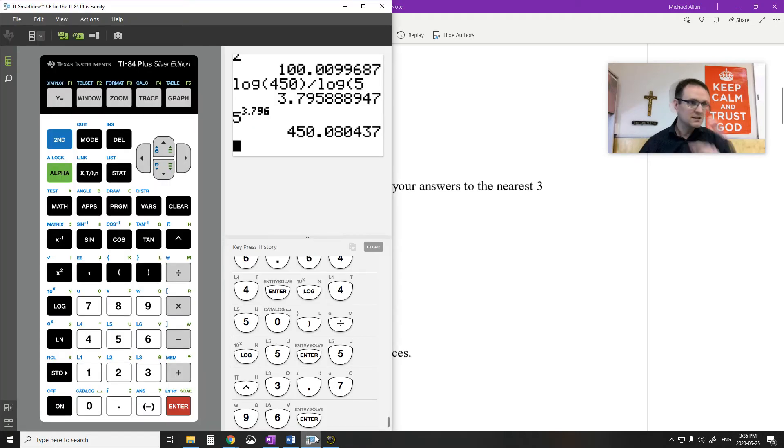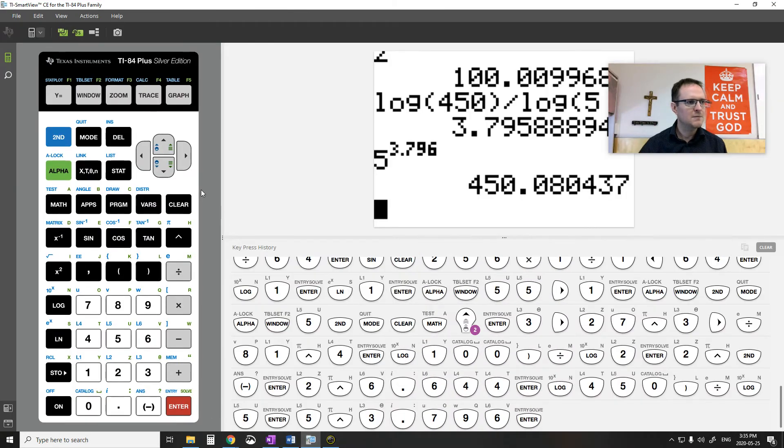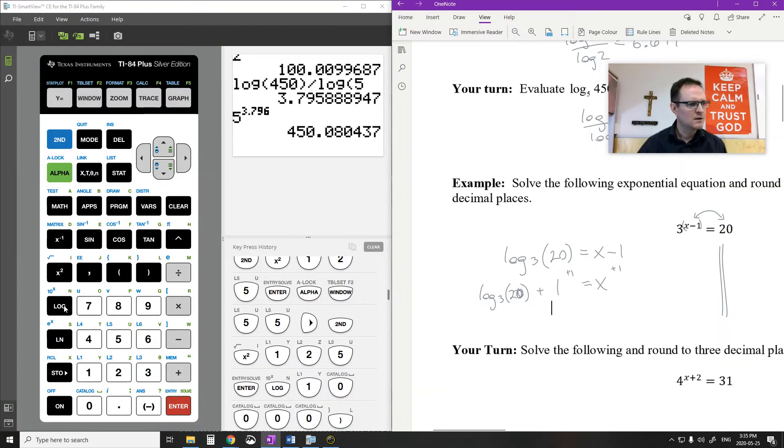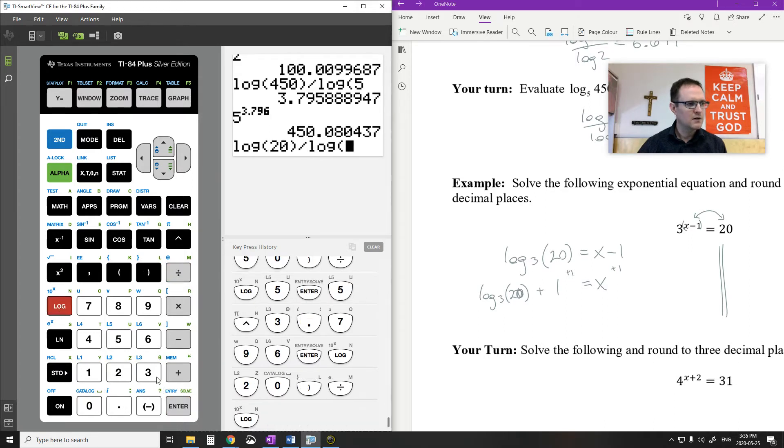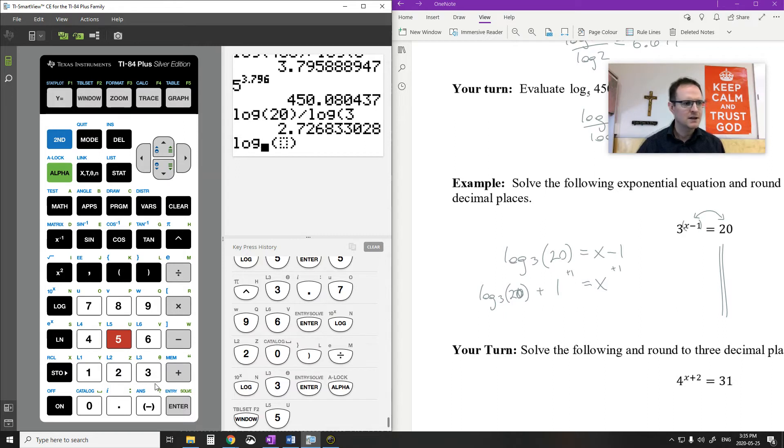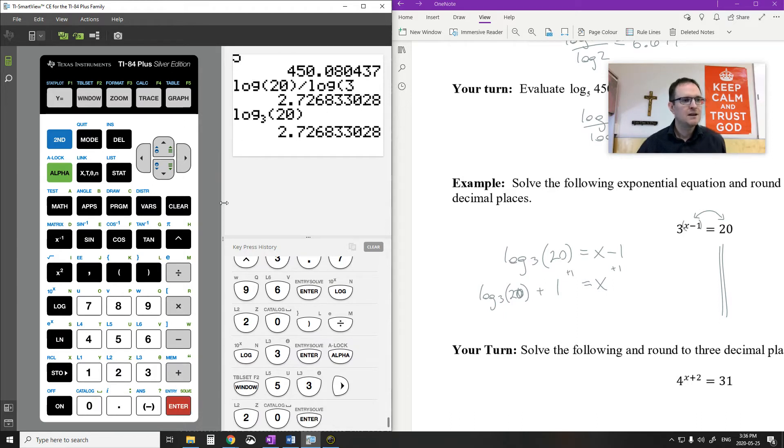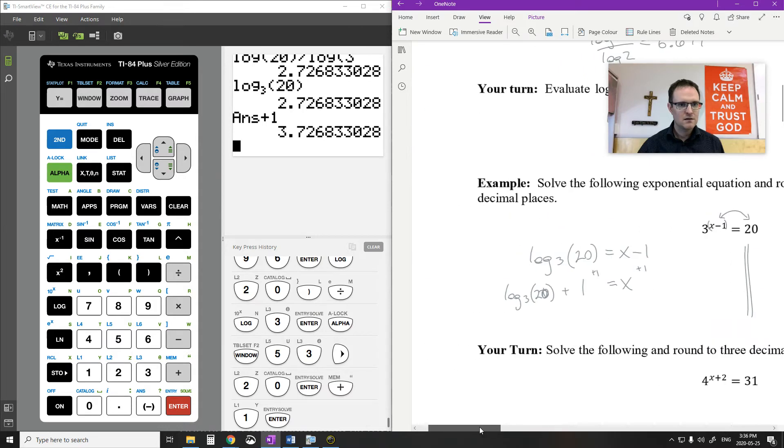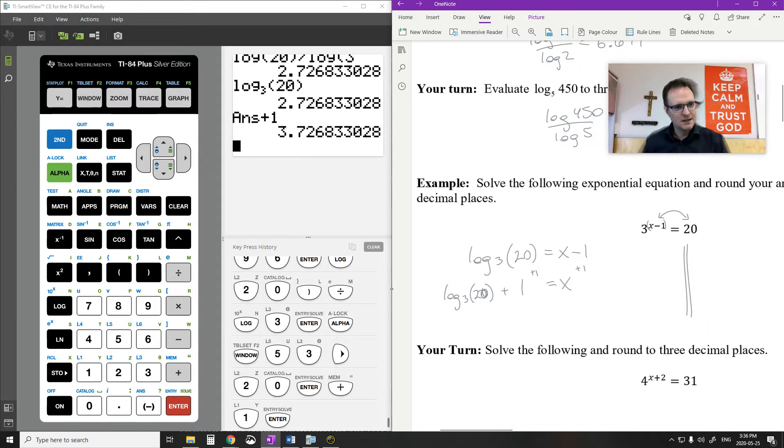So log base 3 of 20, I can go log 20 divided by log 3, or I can go alpha window to log base and put in a 3 and a 20 there. You get the same number. Once you have that number, I'm going to plus 1. So I'm going to get 3.727 is equal to x.